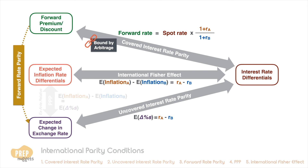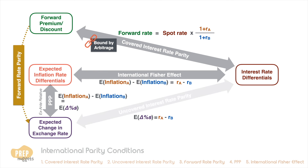We've also learned that interest rate differentials should mirror inflation differentials if the international Fisher relation holds. If that is true, we can also use inflation differentials to forecast future exchange rates, which is the premise of the ex-ante version of PPP. Furthermore, if the ex-ante version of relative PPP as well as the international Fisher relation both hold, uncovered interest rate parity will also hold.